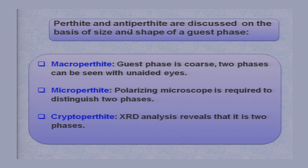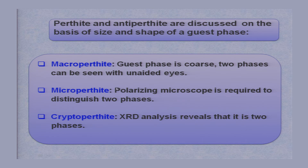Perthite and antiperthite relationships are discussed on the basis of size and shape of the guest phase, and they are further categorized into three major categories. Macroperthite: the guest phase is coarse-grained and can be seen with the naked eye without the help of a microscope or hand lens. Microperthite: a polarizing microscope is required to distinguish the two phases — which is the host, which is the guest, which is orthoclase, which is albite. If the two phases can be seen under the microscope, the texture is called microperthite.